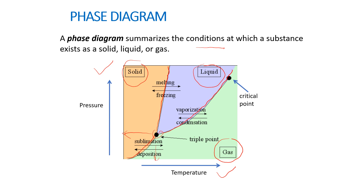At the triple point, the three phases — solid, liquid, and gas — can coexist at equilibrium. At high temperature and pressure, we have the critical temperature and critical pressure, defining the critical point, where the substance can exist as both liquid and gas. When we increase the temperature above the critical point, we have the supercritical fluid, where the substance can no longer exist as a liquid or gas — it is in between.